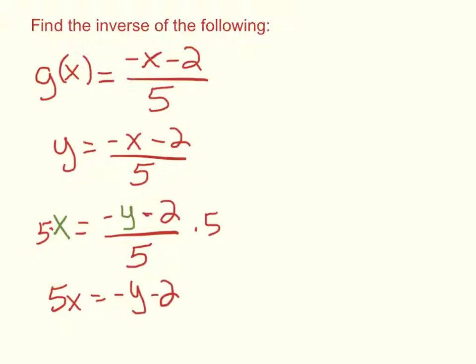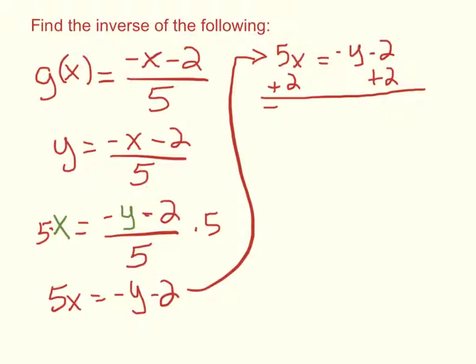So we still want to get our y all by itself. We're going to have to move this 2 here to the other side. So I'm going to rewrite it up here. 5x equals negative y minus 2. Alright, so we're going to add 2 to both sides. 5x plus 2 equals negative y.